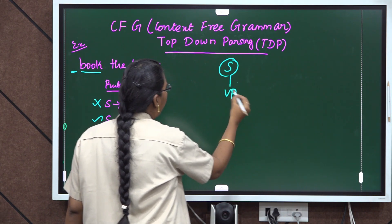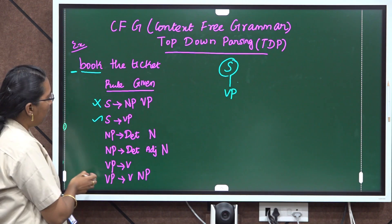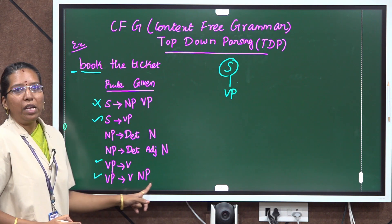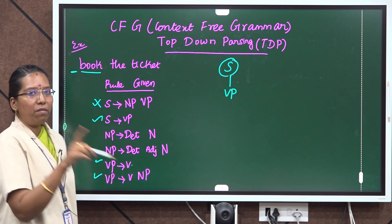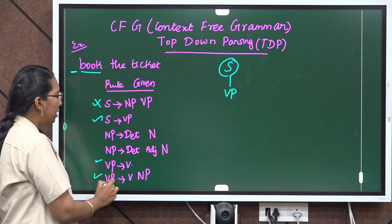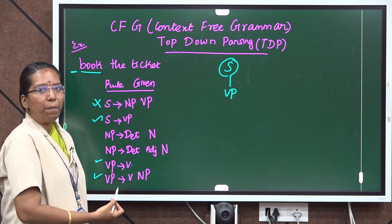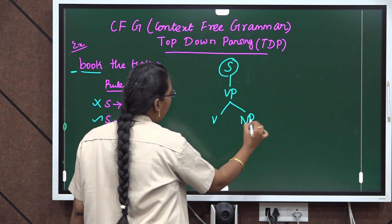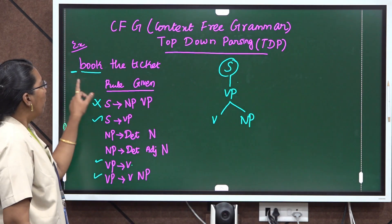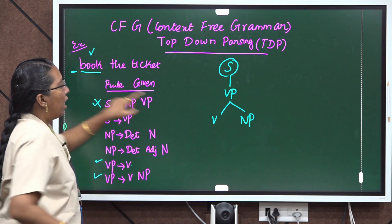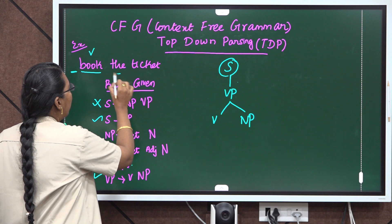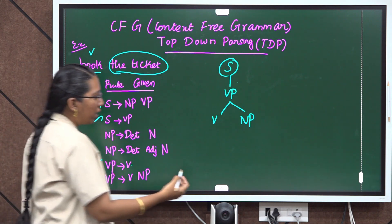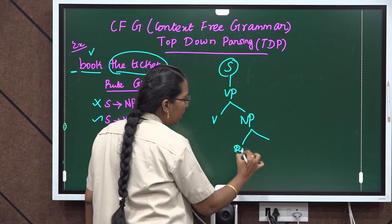Starting with VP, I am going to split it. VP can go to V, or VP can go to V NP. If I use V alone, only one word should be there and we cannot divide further. So I use the second rule: VP gives V NP. So V and then NP — NP is noun phrase. 'Book' goes to V, then for the noun phrase we have two words: 'the' and 'ticket.' 'The' is a determiner and 'ticket' is a noun. NP is further divided into determiner and noun.